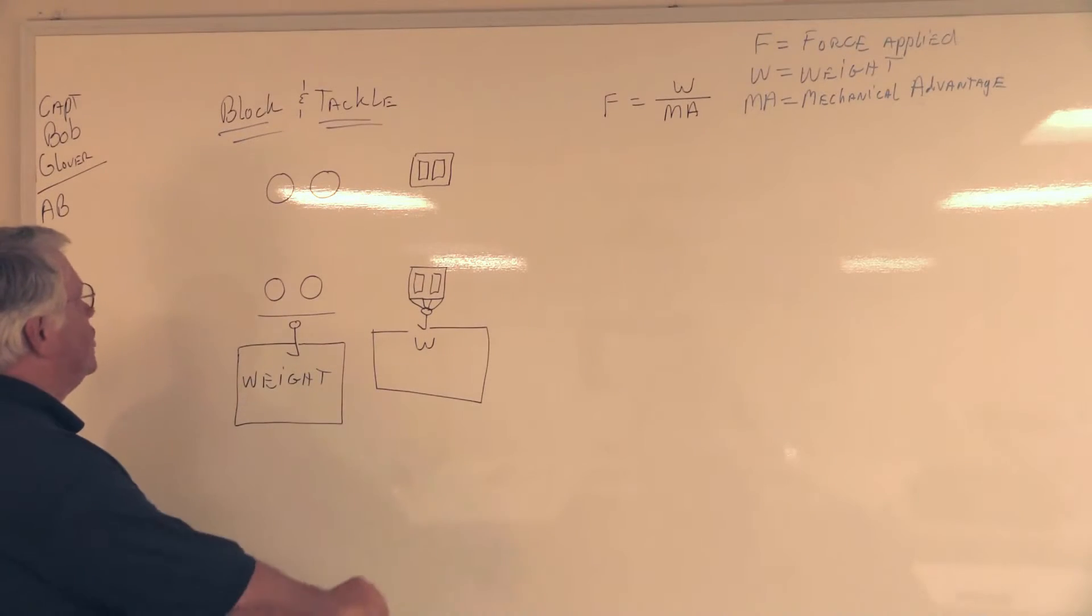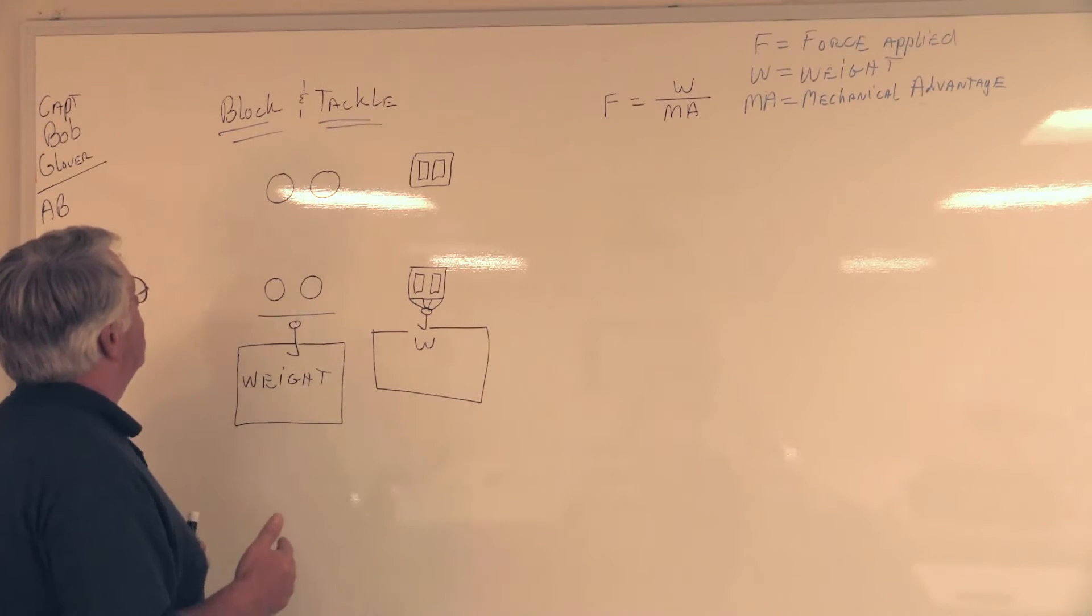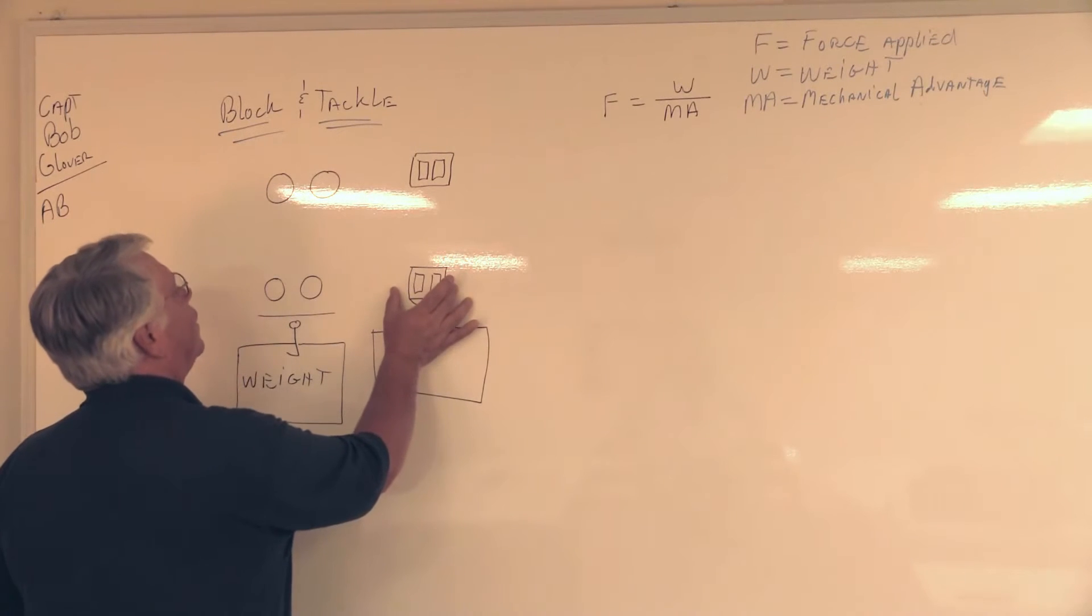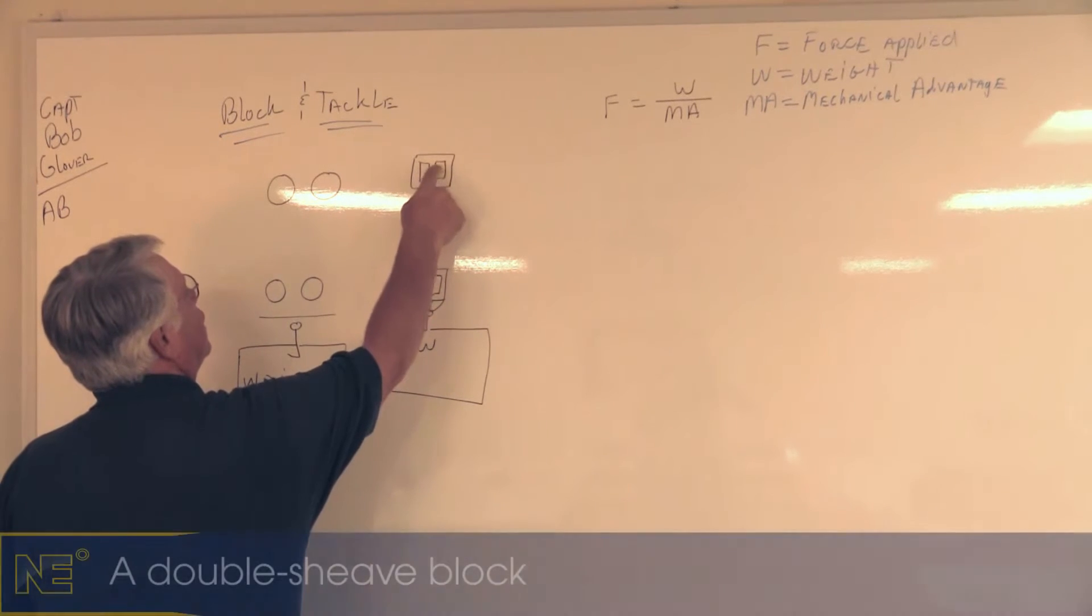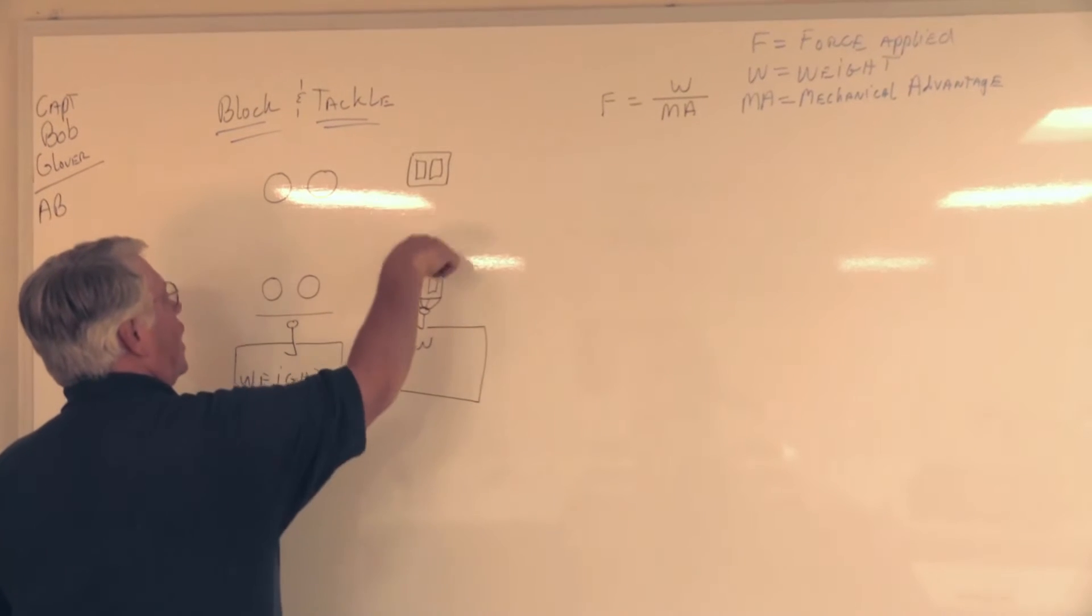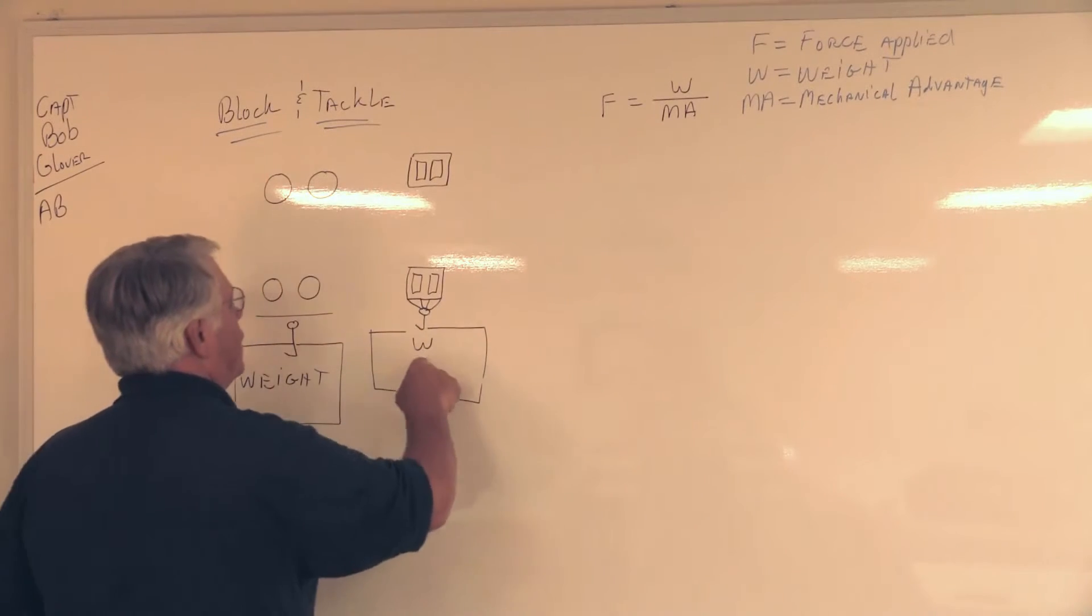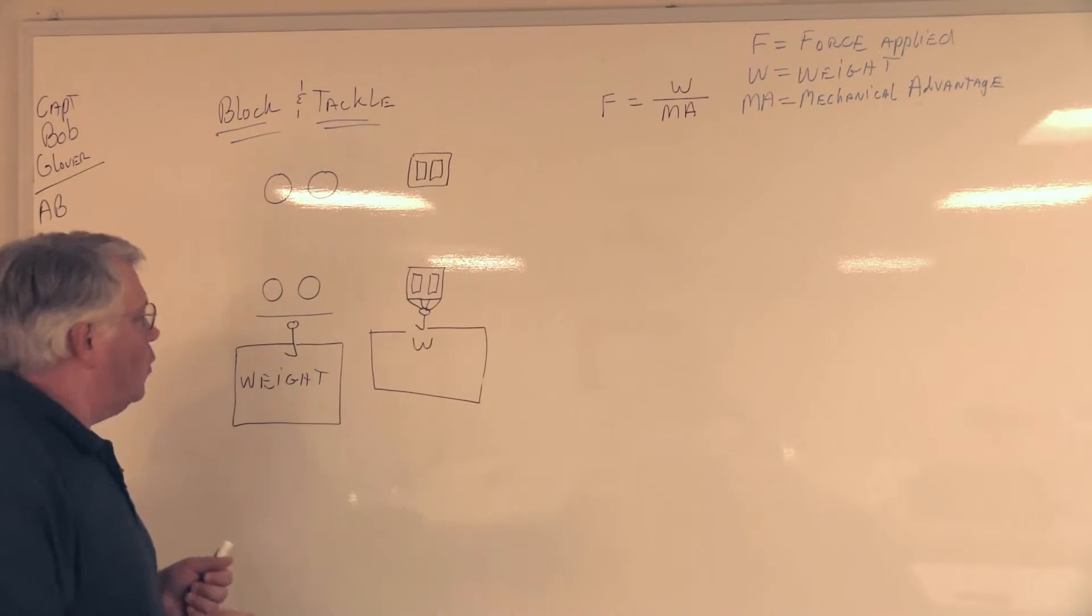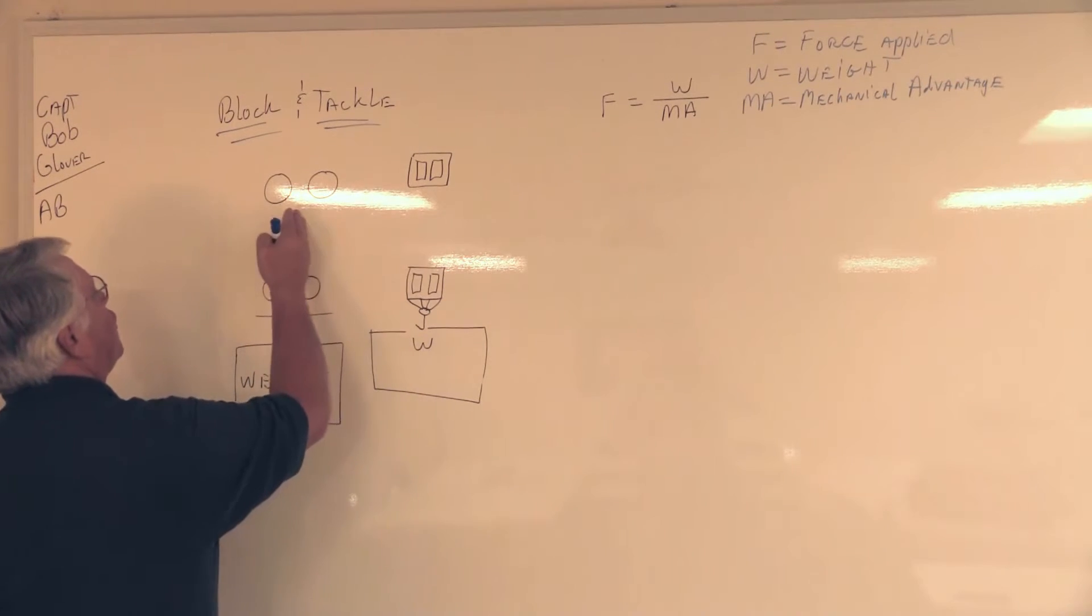What I've drawn here on the board is a way of explaining and showing the mechanical advantage. I've taken a typical block - this is a double shiv block with a shiv in each side. We also have a double block here. Underneath it, I put a block with a W in it representing weight. To make this easier, I actually draw it out this way on the board.